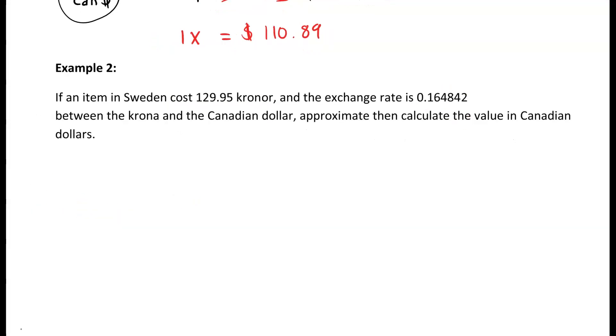In example 2, if an item in Sweden costs 129.95 krone and the exchange rate is 0.164842 between the krone and the Canadian dollar, approximate then calculate the value in Canadian dollars. We're going to look at calculating right here.